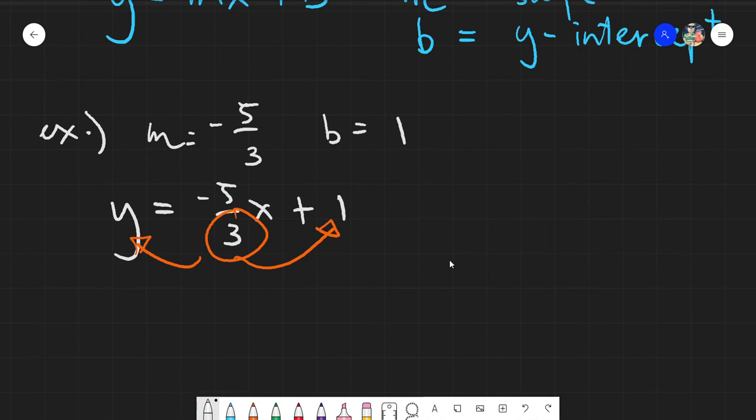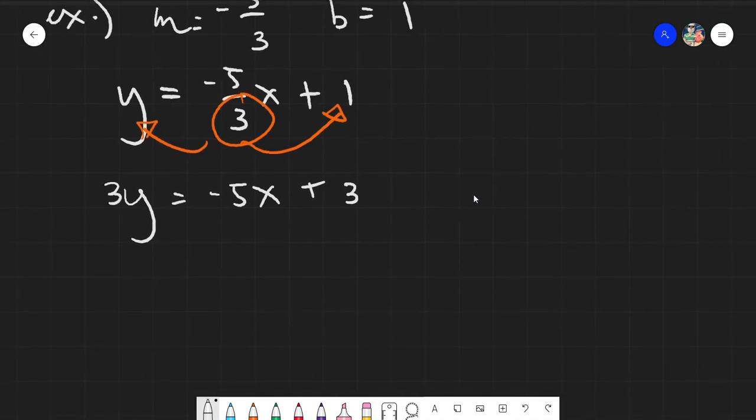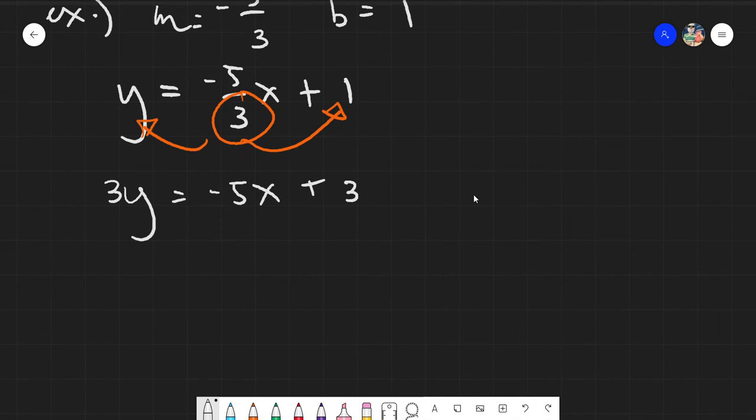So you would be distributing the denominator to both the y value and also the intercept. Multiplication. So doing that, 3 times y is 3y. It equals to -5x, and 3 times 1 would be positive 3. And having this value, what would happen now would be transpose. So we transpose now this -5x here on the other side, 5x + 3y = 3.